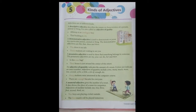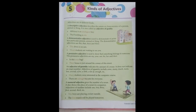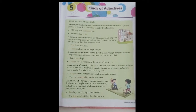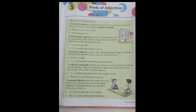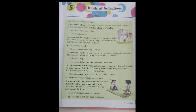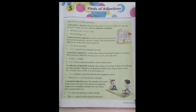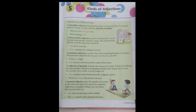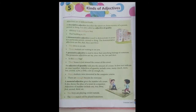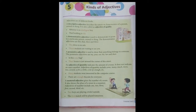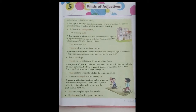Next, let's come to a demonstrative adjective. A demonstrative adjective is used to demonstrate or point to a particular person, animal or thing. It refers directly to someone or something, and includes: this, that, these and those. Wherever you find these words, underline them and write demonstrative adjective. For example: 'This dress is on sale.' 'Those students are waiting to see you.'